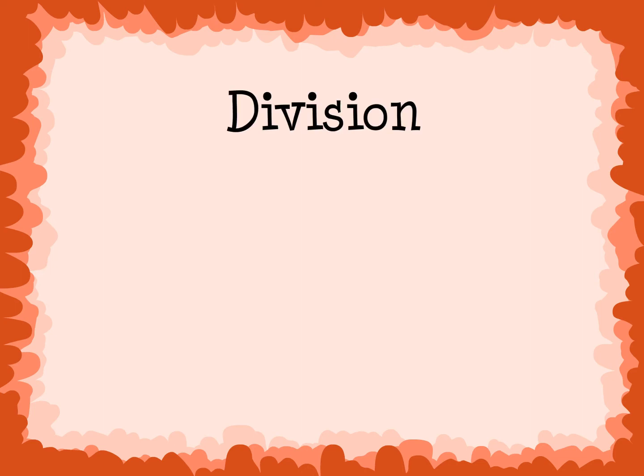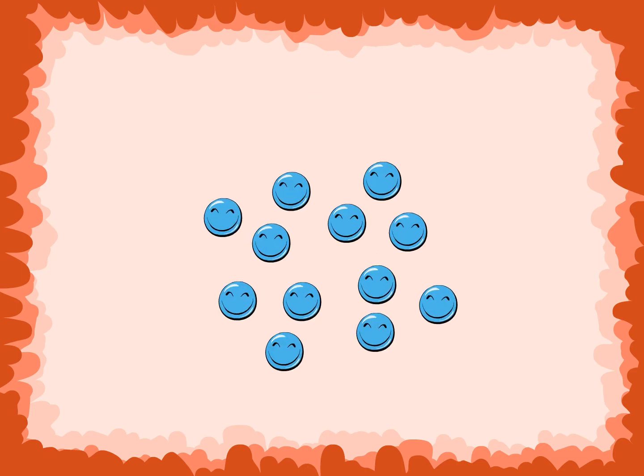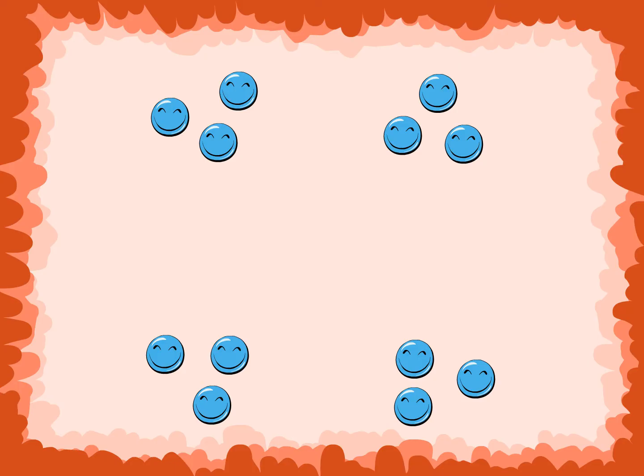Division. Division is separating a group of objects into a certain number of equal groups. 12 divided by 4 equals 3.